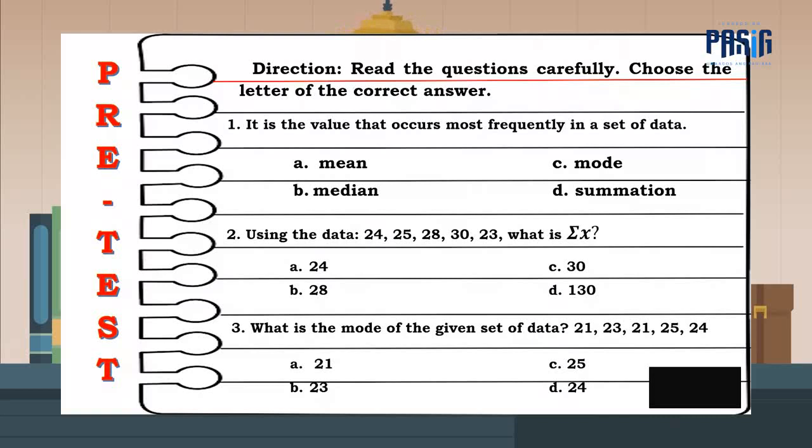Number 1. It is the value that occurs most frequently in a set of data. The answer is letter C. Number 2. Using the data 24, 25, 28, 30, 23, what is summation of X? The answer is letter D. Number 3. What is the mode of the given set of data? 21, 23, 21, 25, 24. The answer is letter A.